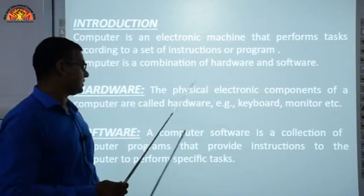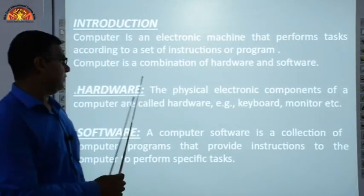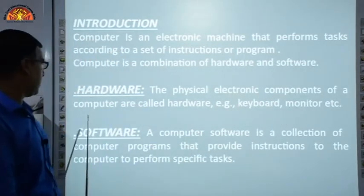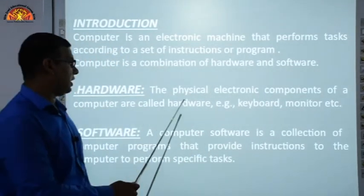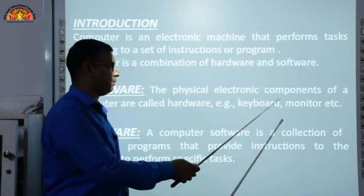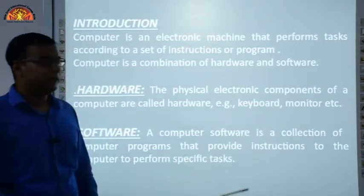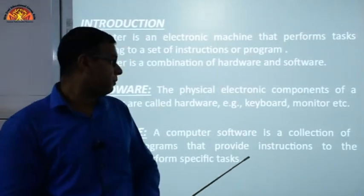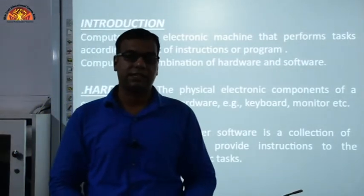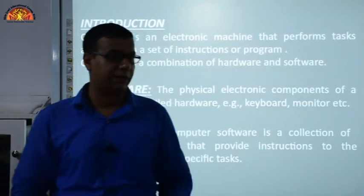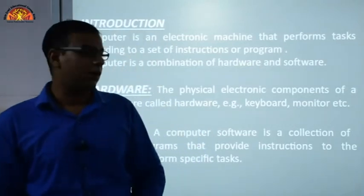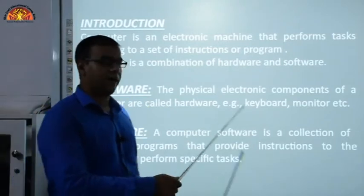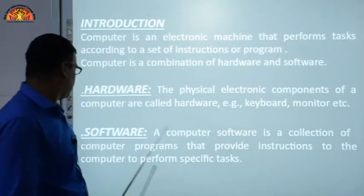Now let us discuss hardware. The physical electronic components of a computer are called hardware. Examples include keyboard, monitor, etc. The physical parts of a computer that you can touch are hardware — such as the keyboard and mouse. These are all examples of hardware.